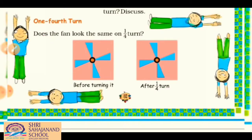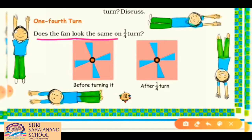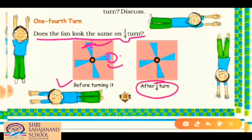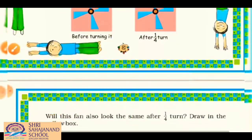Now let's read some problems from the textbook. Does the fan look the same on one fourth turn? We have a fan with all blades colored blue. If you take a one fourth turn to the right, the upper blade comes to the side — but it is also blue, so there is no change. A one fourth turn shows no change in this shape.